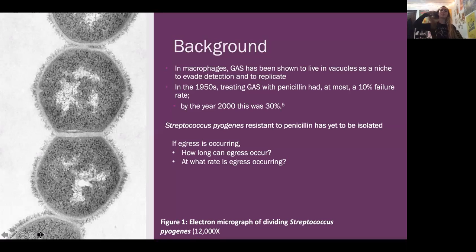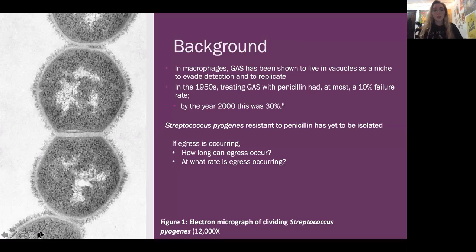A bit of background about group A strep. In macrophages, group A strep has been shown to live in vacuoles as an intracellular niche and evade detection from the immune system, and they are able to replicate. In the 1950s, penicillin had been used to treat group A strep, and at the worst it was 10% of the time ineffective. By the year 2000, this was 30%. So naturally you'd expect that this is a case of antibiotic resistance, though there has never been an isolate of group A strep that was resistant to penicillin. This led researchers to suspect that group A strep is hiding out inside of cells to physically evade killing from the antibiotics.